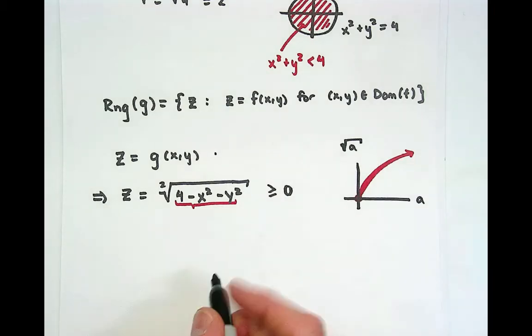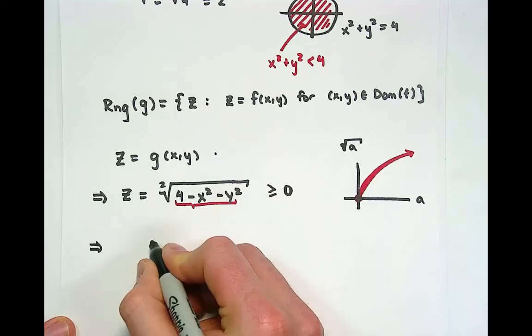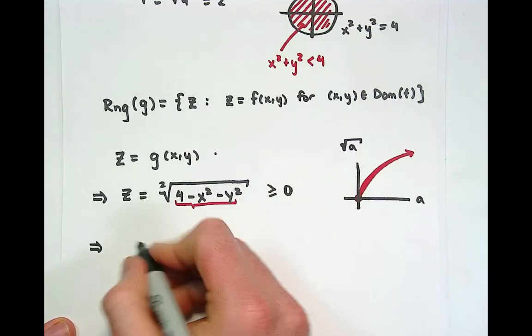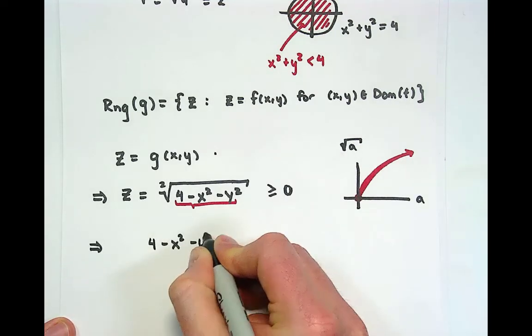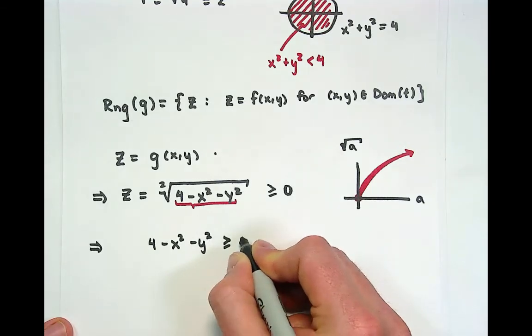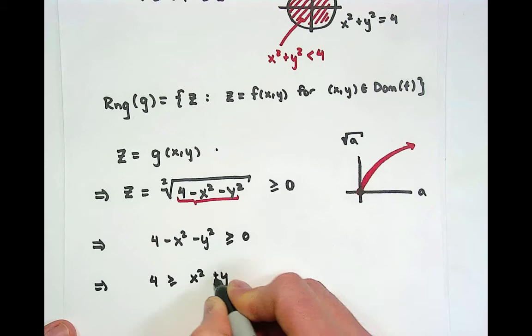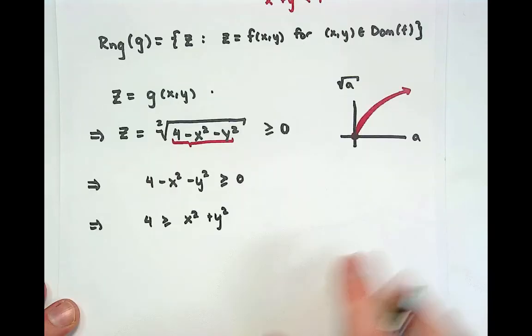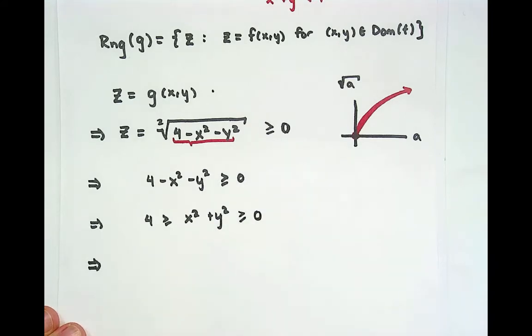Notice also that since we have our upper bound, we knew that from the domain, 4 minus x squared minus y squared would have to be greater than or equal to 0. This meant that 4 was less than or equal to x squared plus y squared. We've just seen that based on our domain, the lower bound for that is 0.